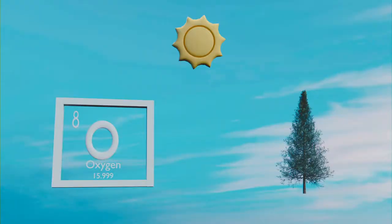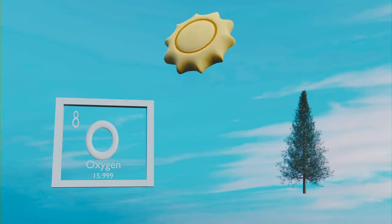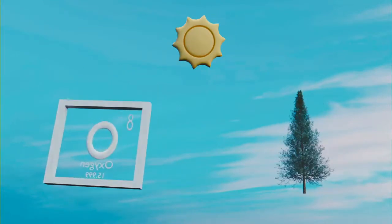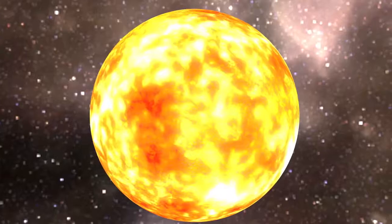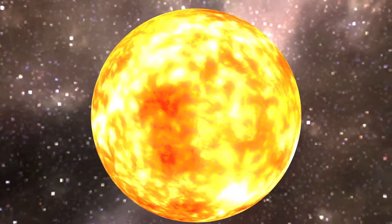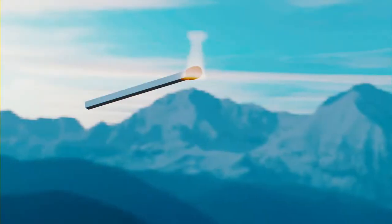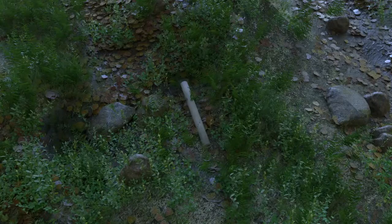There are three components that contribute to wildfires, known as the fire triangle. There's the heat source, fuel, and oxygen. Heat sources such as the sun or a burning substance such as a small match could supply enough heat to spark a fire.